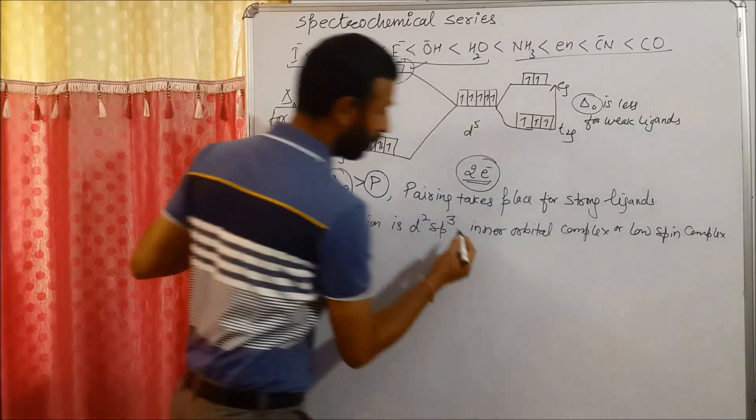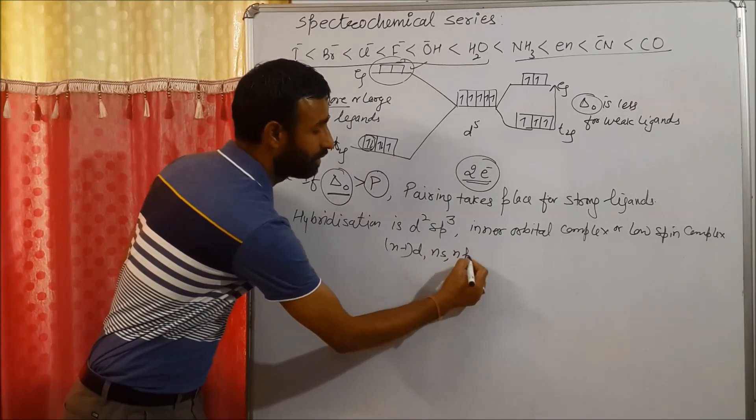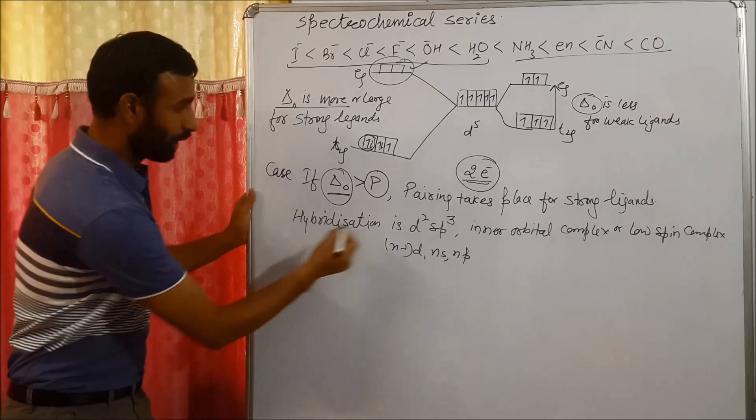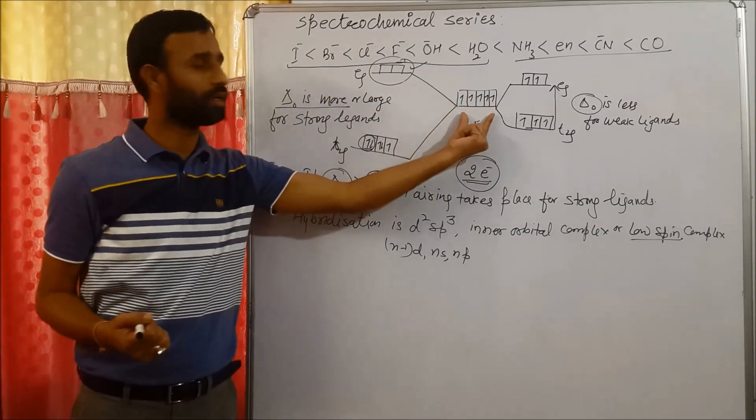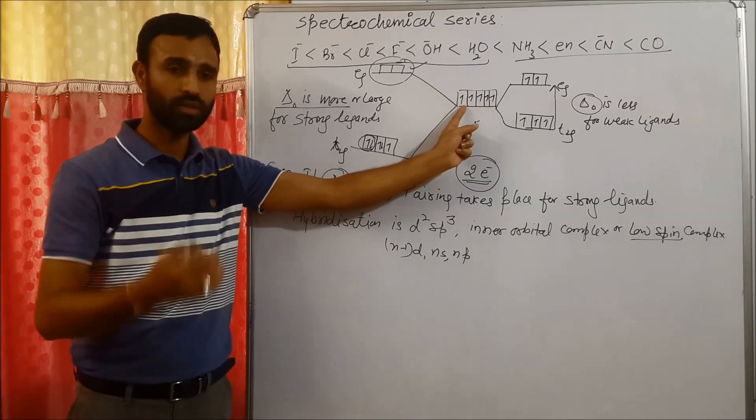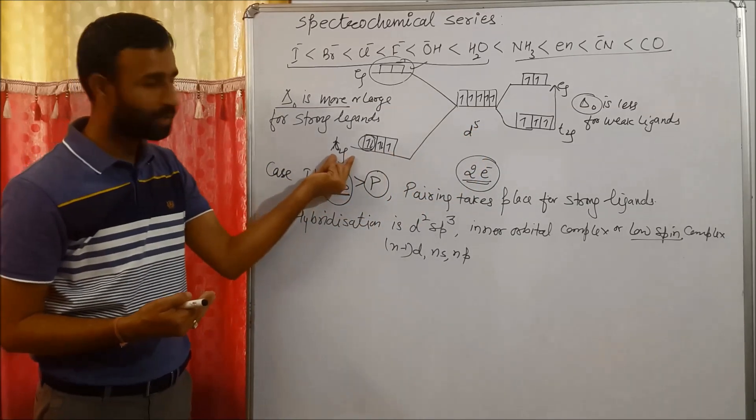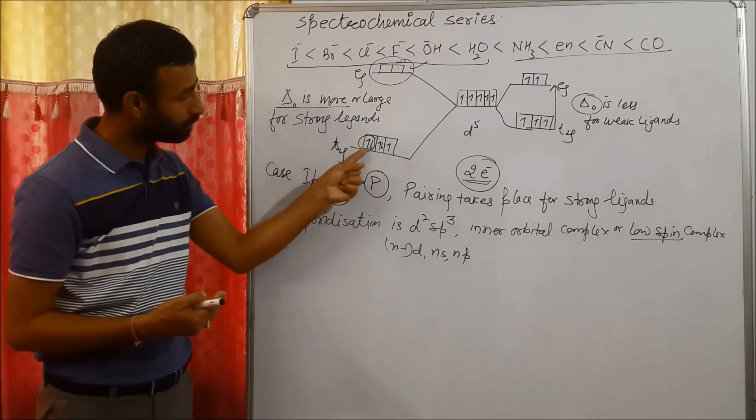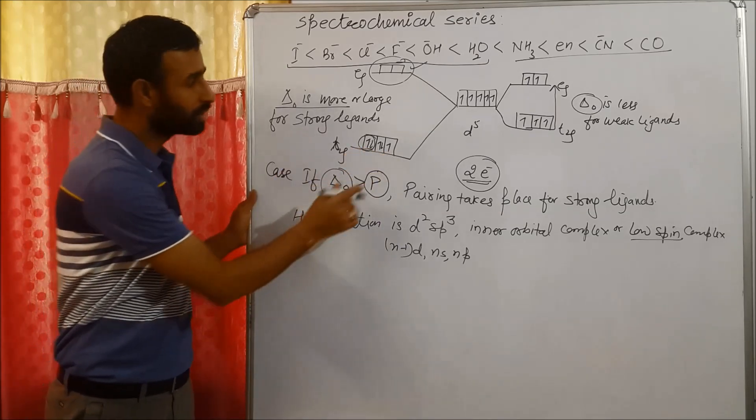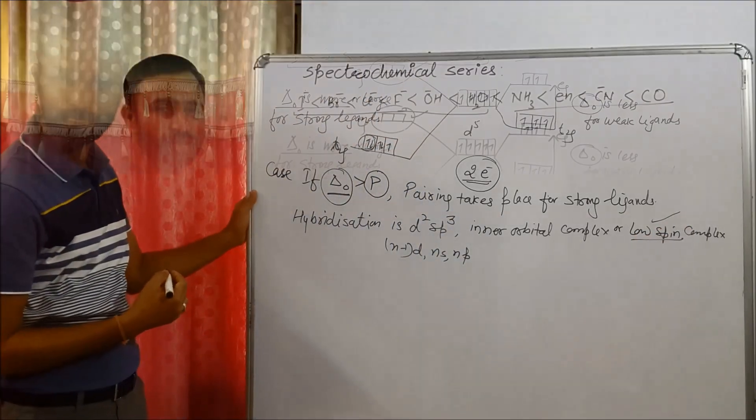Why it is known as inner orbital complex? Because here d after we used is actually n minus 1 d. And this is ns and np. Like 3d, 4s, 4p. And low spin, what is the spin in free state or spherical field? It is 5 by 2. Because per electron it is plus half. So for 5 unpaired electrons it is plus 5 by 2. And when they are paired, when strong ligands are there, plus half, minus half, plus half, minus half, zero, and plus half. So spin is plus half. Means spin converted from plus 5 by 2 to plus half. Therefore, complexes of low spin.